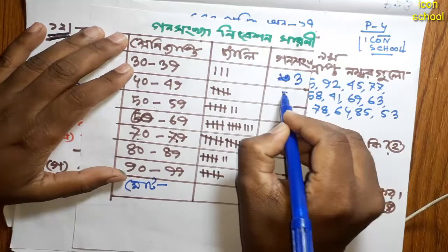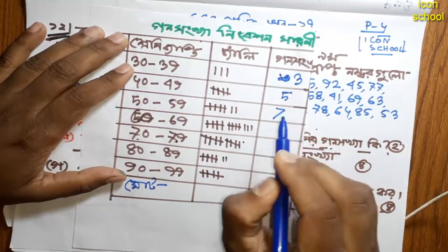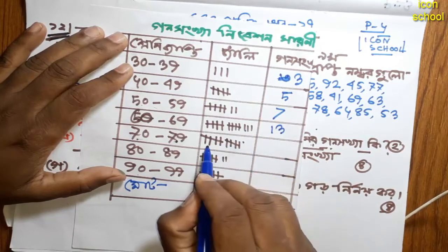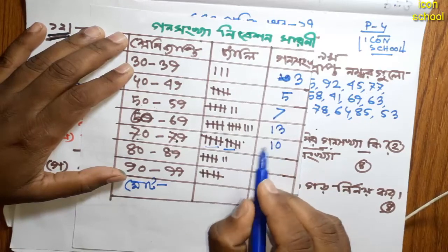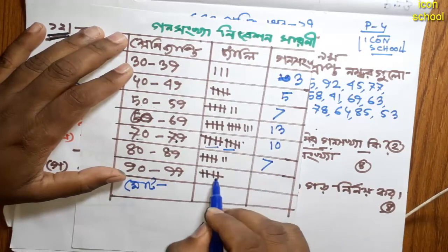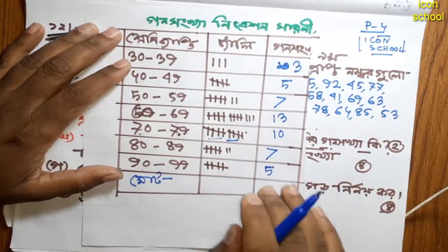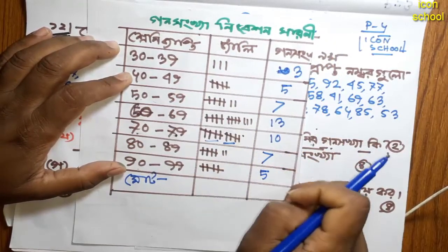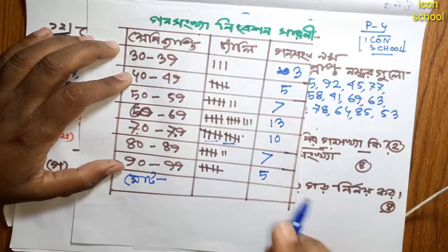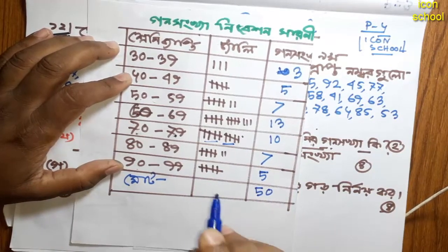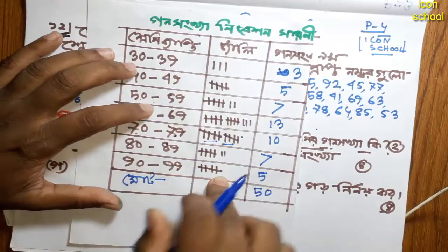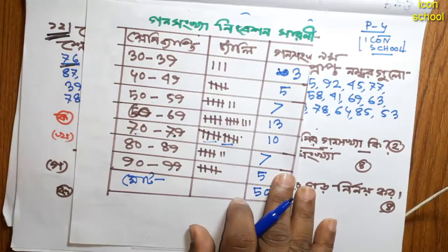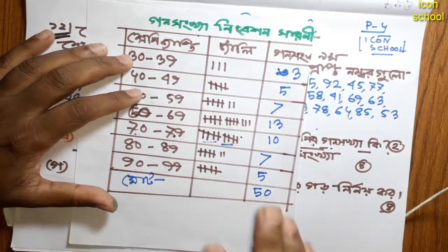Here, 5 is 5. Here, 7 is 7. Here, 5 is 10. Here, 5 is 10. Here, 5 is 10. Here, 5 is 7. Here, 5 is 5. Here, 5 is 10. Here, 5 is 15. Here, 6 is 15. About one more.